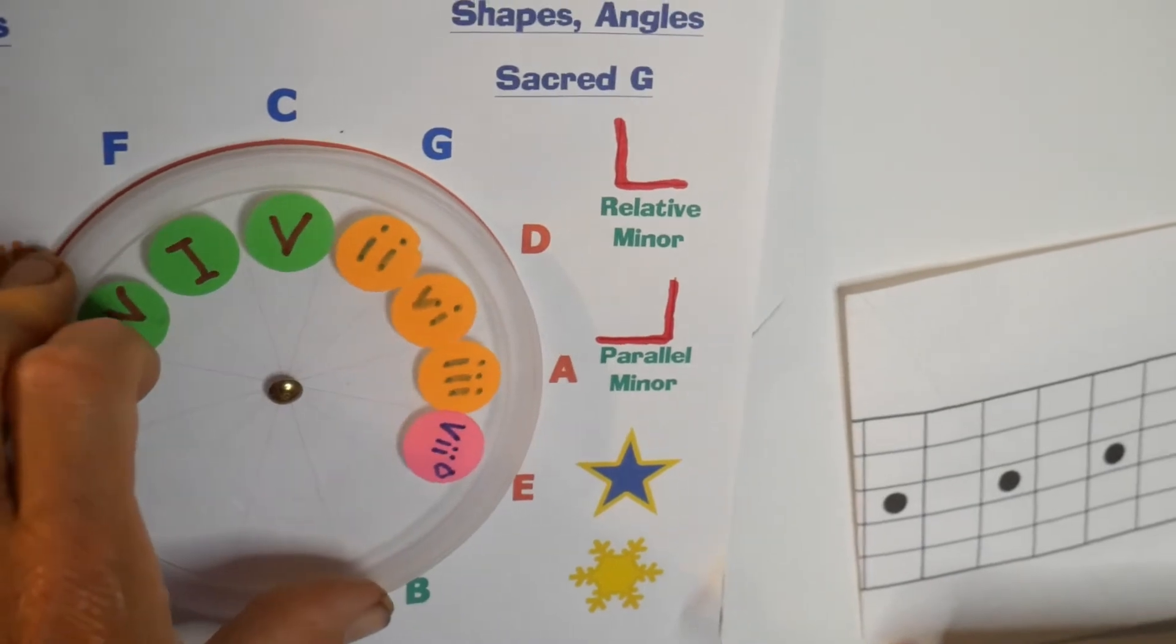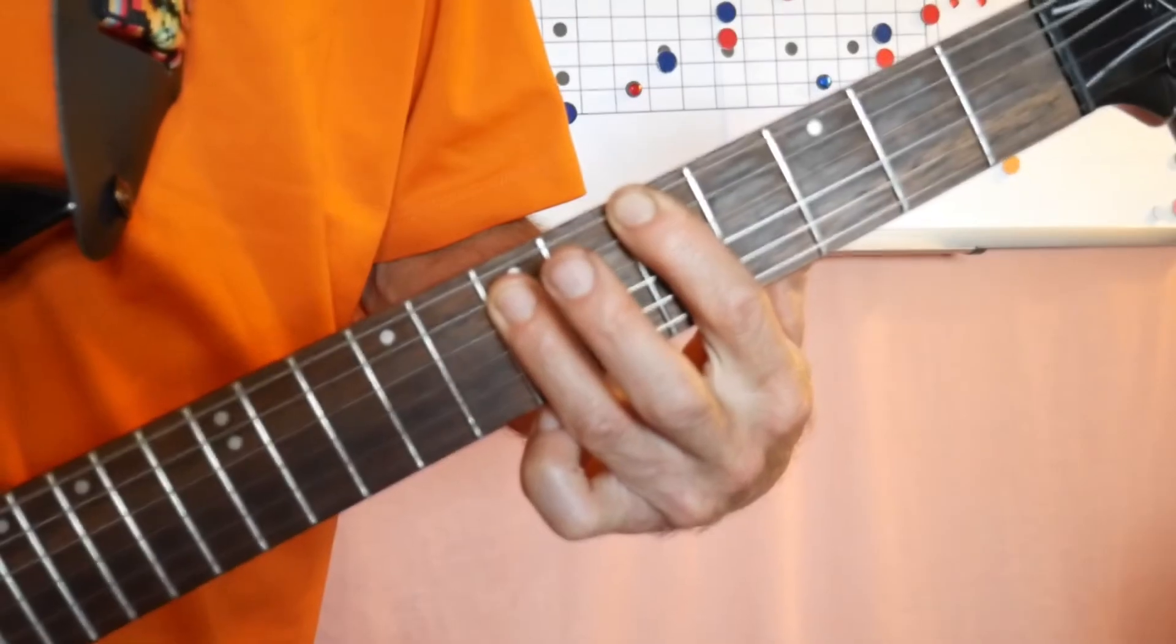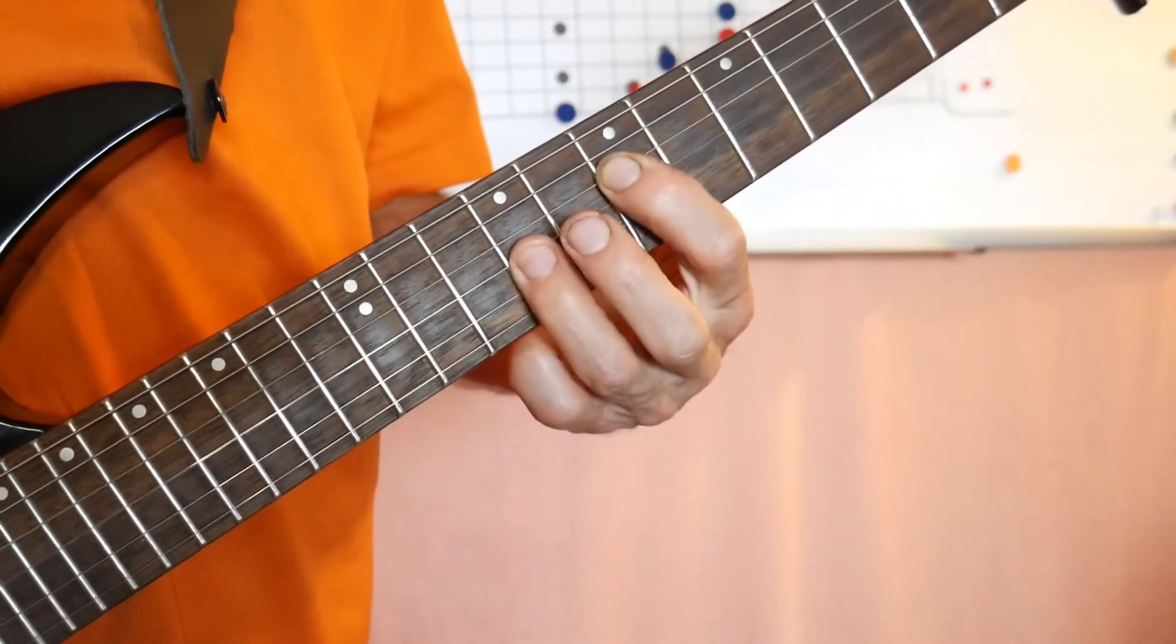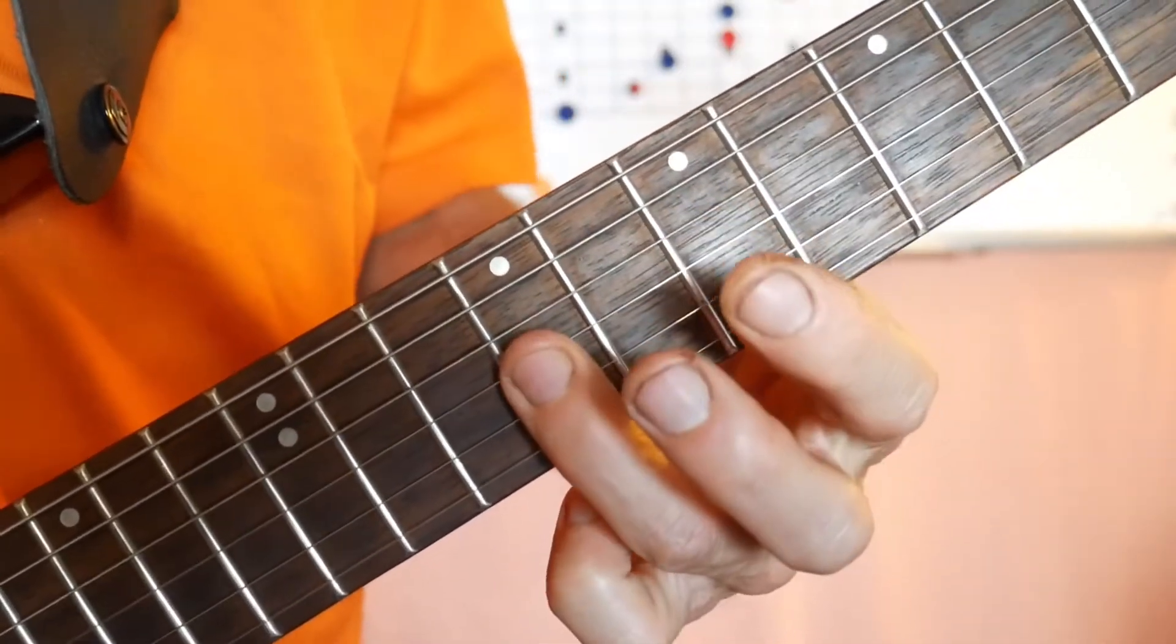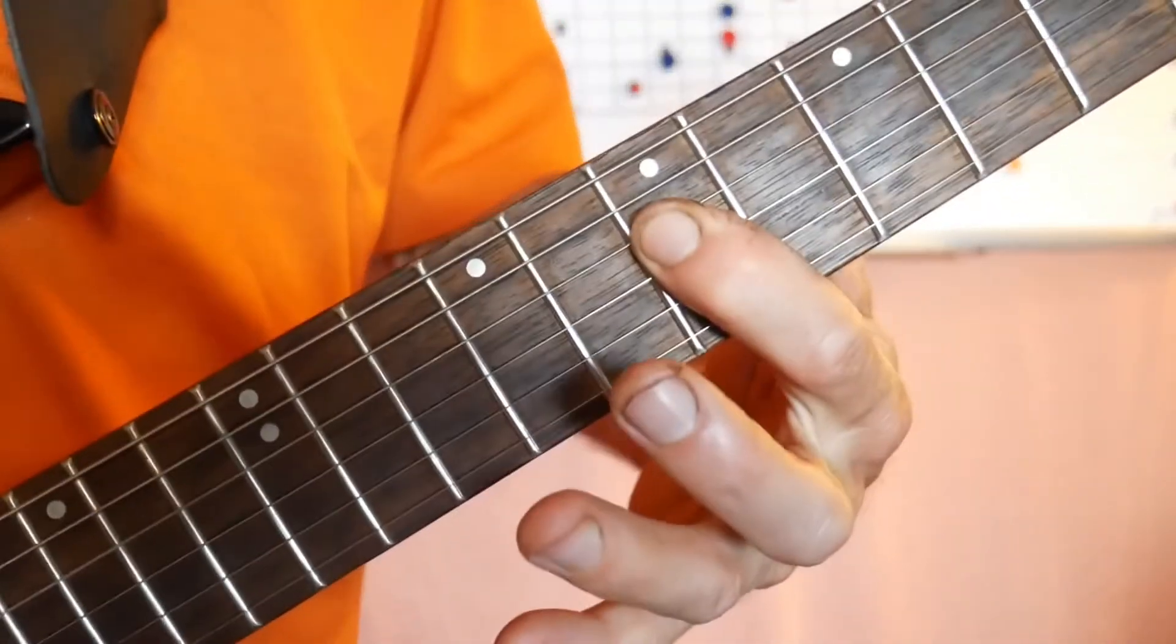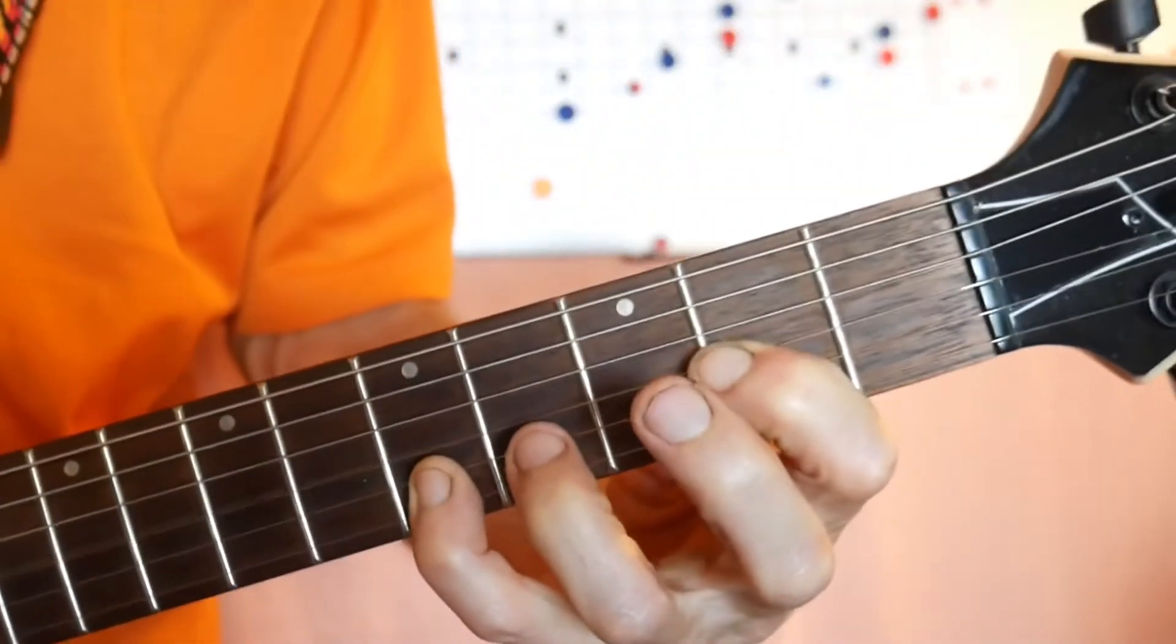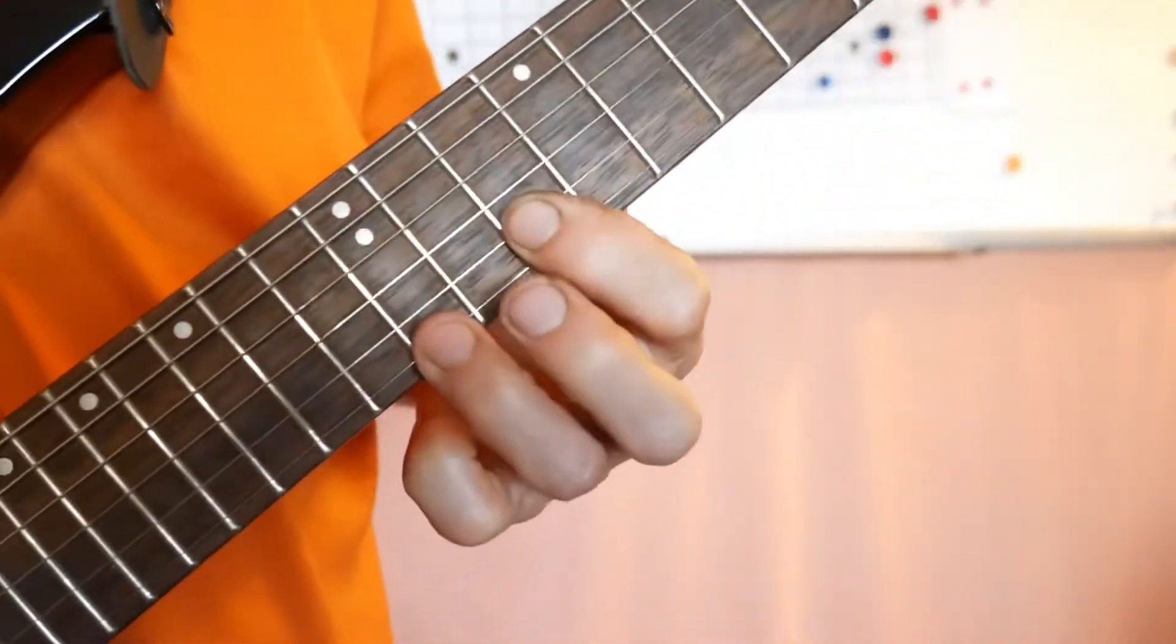And the guitar actually has a pattern to it. If you look at most of these, there's a pattern where you play the root, then you go down to the next string and up two frets. Now it doesn't work everywhere because of the way the B string is tuned. But in most of the places it follows this pattern, and it's so simple to use.